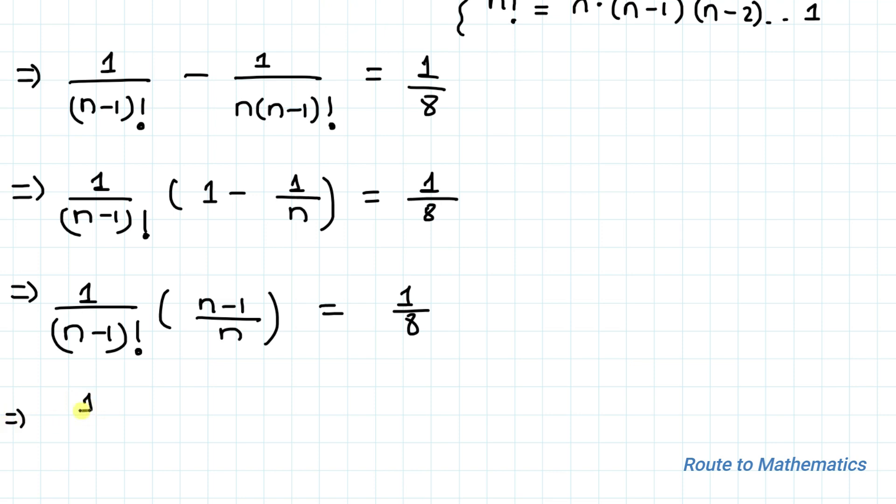So this implies, here we have 1 by, similarly (n-1)! can be written as (n-1) multiplied with (n-2)! multiplied with (n-1) divided by n equals to 1 by 8.